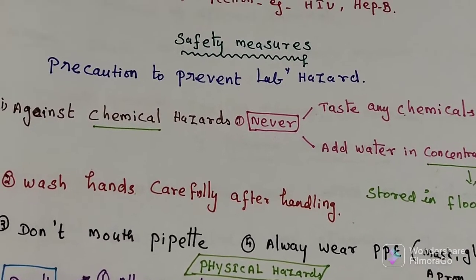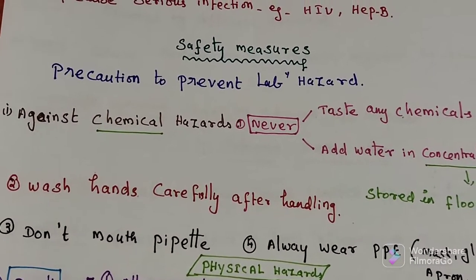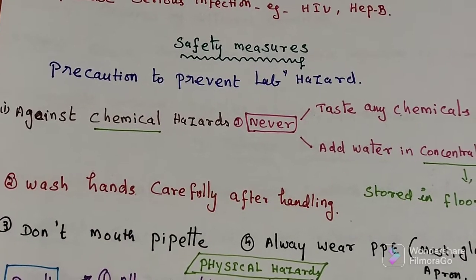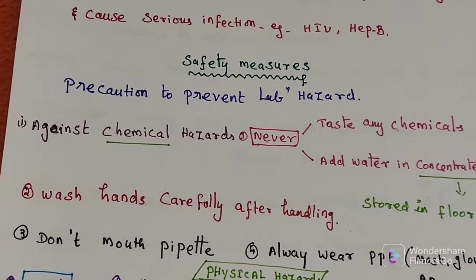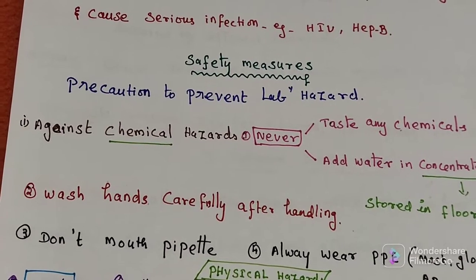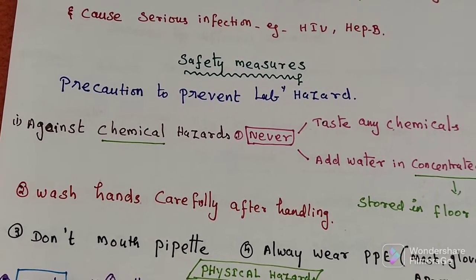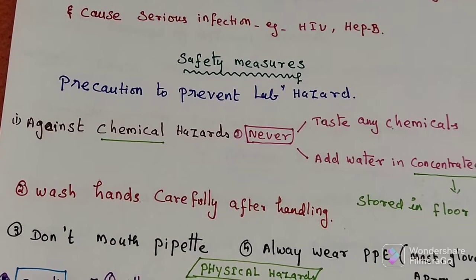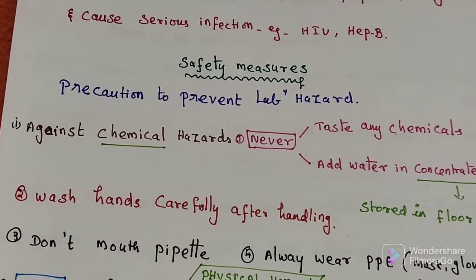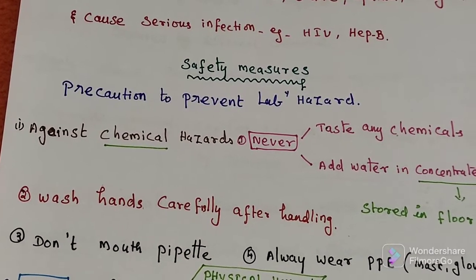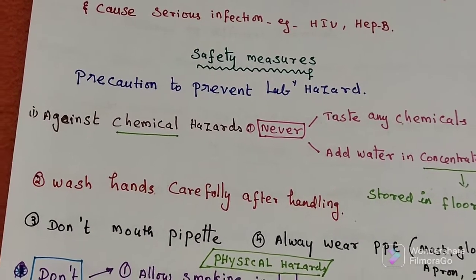Next is safety measures. The precaution taken to prevent laboratory hazards is called a safety measure. We will now discuss chemical hazard safety measures.